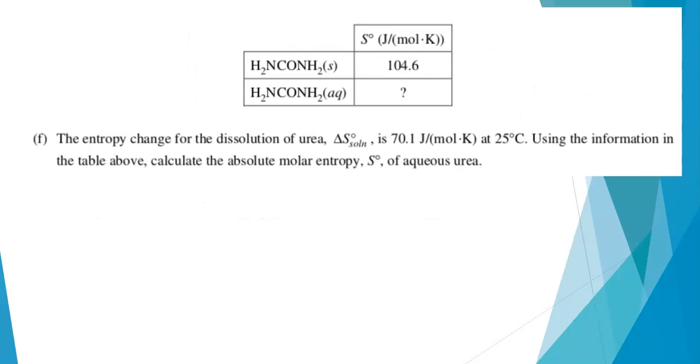Part F. The entropy change for the dissolution of urea is 70.1 joules per mole per kelvin at 25 degrees Celsius. And then we have a table here that gives us the entropy of formation for solid urea. And the question asks us to find the molar entropy of aqueous urea. So this was scored out of one point, and it's really some math. Entropy is a state function, so we can look at the entropy of the products minus the entropy of the reactants.